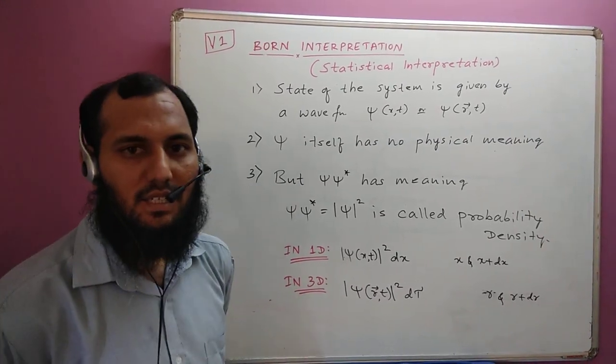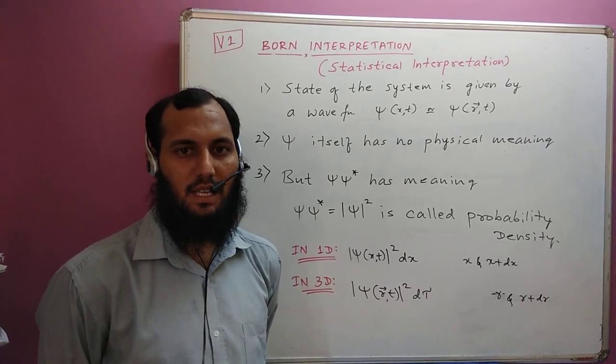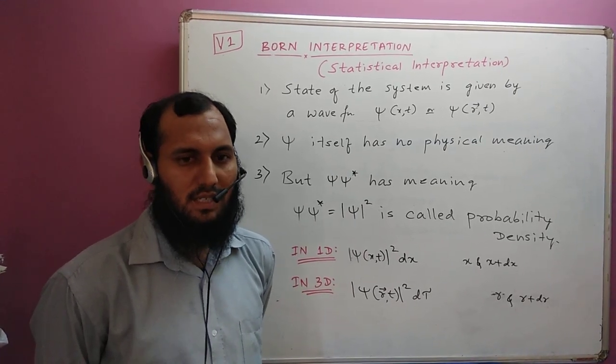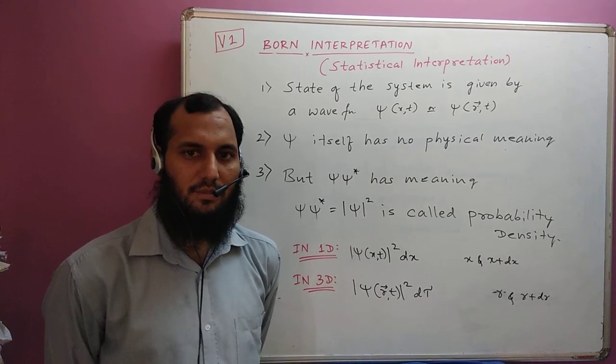Already we have seen in the introductory classes of quantum mechanics that there are various interpretations of quantum mechanics. This is one more interpretation. What does this statistical interpretation or Born interpretation say?